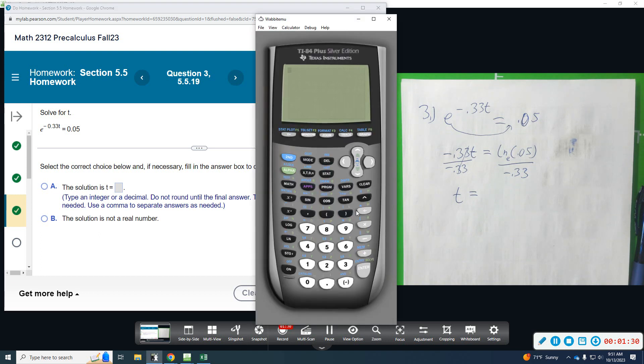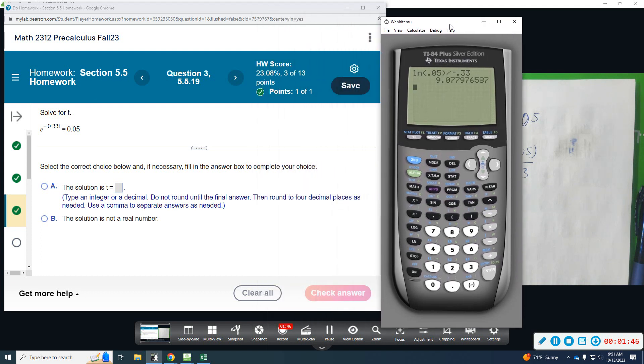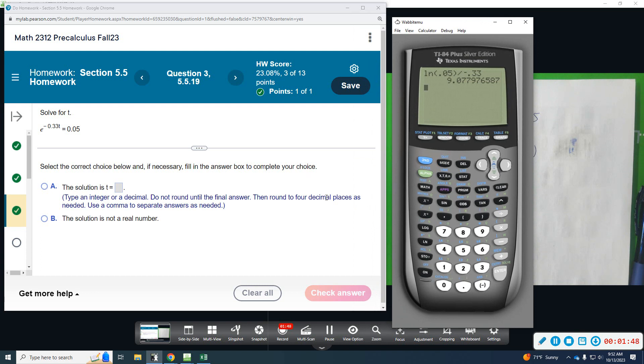I'm going to clear out what I have, and I'm going to do natural log. We're going to do 0.05, and then we're going to divide by negative 0.33. And we want to round to four decimal places here. So we have 9.07797.